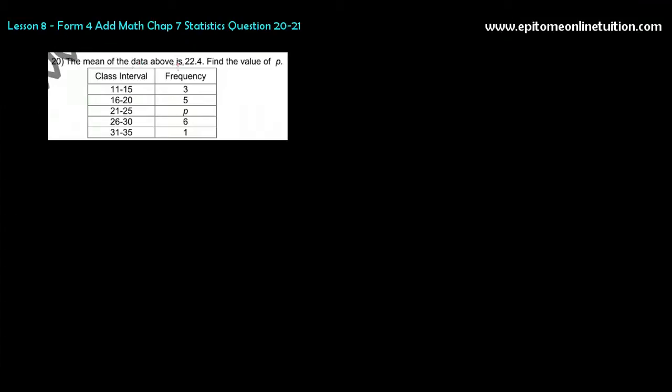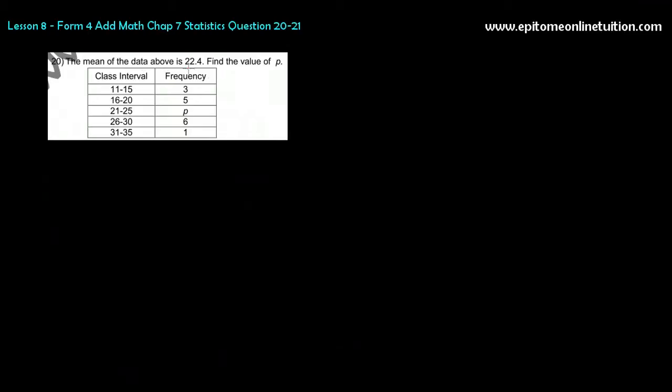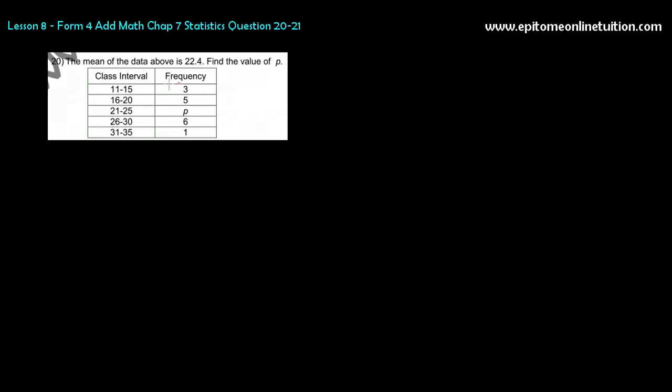So let's look at it. It says the mean of the data above is 22.4. Find the value. Now the mean is given to you and there is an unknown here. This is very common in AdMath - they give you the answer and ask you to reverse it back to find an unknown.